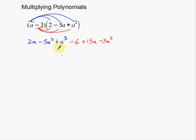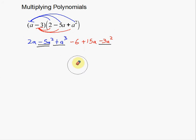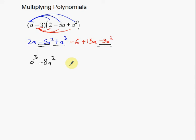Now we need to combine like terms. A to the third is all by its lonesome. Then go down one step to your a squared — wait, that's a to the third and that's a squared, those are not the same. Backtrack: a to the third is all by its lonesome. There's an a squared: negative 5a squared plus negative 3a squared gives negative 8a squared. It's very handy to label these with underlines because it was easy to catch that mistake right there.